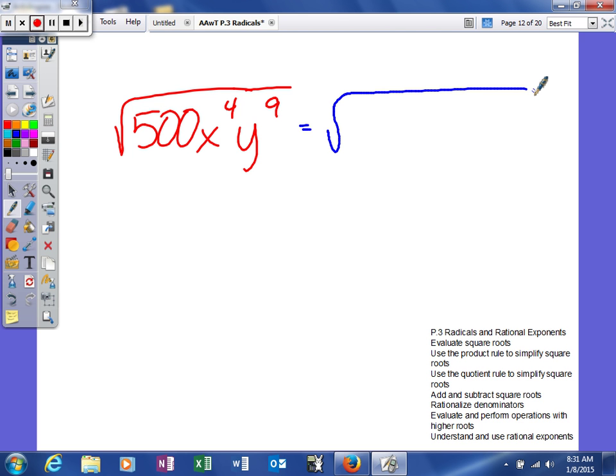500 is not a perfect square, but there are perfect squares that will go into 500. 4, for example, will go into 500. 25 will go into 500. But the largest perfect square that will go into 500 is 100. So we're going to say 100, and then times 5. So those two things have to multiply to give me this, which I think they do.